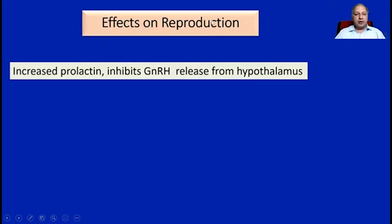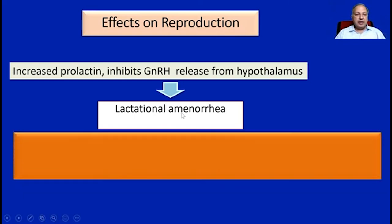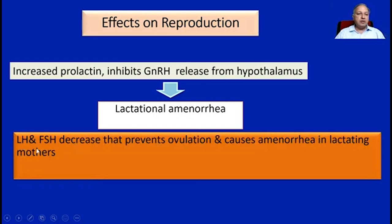Regarding effects on reproduction, increased prolactin causes inhibition of gonadotropin releasing hormone, which normally stimulates the release of LH and FSH. During the lactation period, this leads to amenorrhea, primarily because there will be inhibition of both LH and FSH release due to inhibition of GnRH. Therefore, there will be prevention of ovulation, causing amenorrhea in lactating mothers.